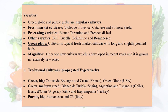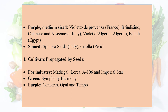Green Globe from the USA is a green variety. Green medium-sized varieties include Blanka de Tundla from Spain and Argentina, and Espondla. Blanka de Orga is from Algeria. Bayram Fasal is from Turkey. Purple and big varieties include Romansko and C3. Purple medium-sized varieties include Violato de Provenza, Brindisino, Catenins, and Nisimis.